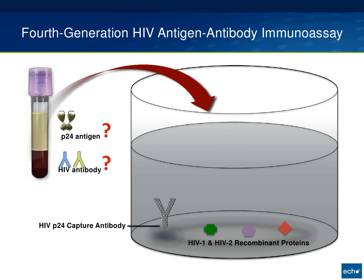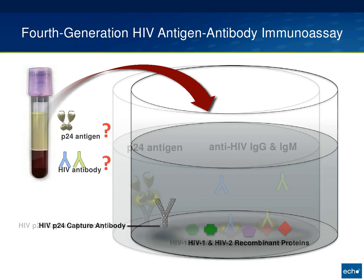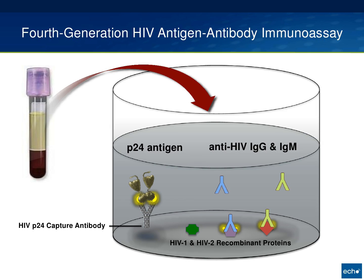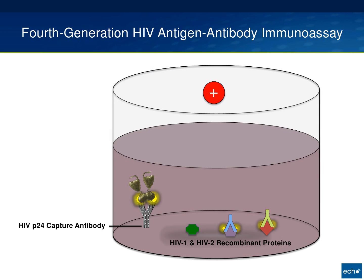When you obtain the patient sample, the question is whether they have either circulating P24 antigen or HIV antibody that will trip the test as positive. If they have both P24 antigen and circulating HIV antibody — which can be IgM and/or IgG — this will trip the test positive. The test just flips as a positive and doesn't tell you whether it was the P24 antigen or the antibodies that tripped it.